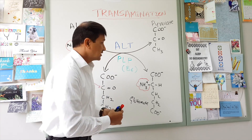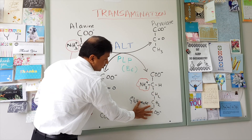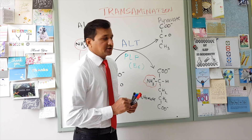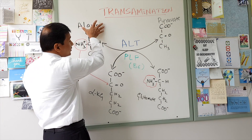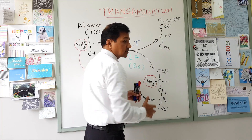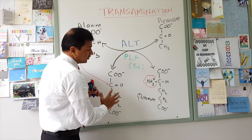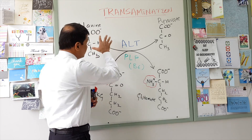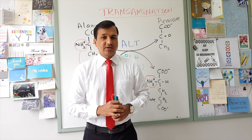One important point: in all 18 transamination reactions, the conversion of alpha ketoglutarate to glutamate or glutamate to alpha ketoglutarate remains the same for all transamination reactions. The only thing that changes is the amino acid on the other side — alanine going into pyruvate, aspartate going into oxaloacetate, and so on. You can place any of the 18 amino acids there. The alpha ketoglutarate-glutamate pair is the common denominator in all transamination reactions.